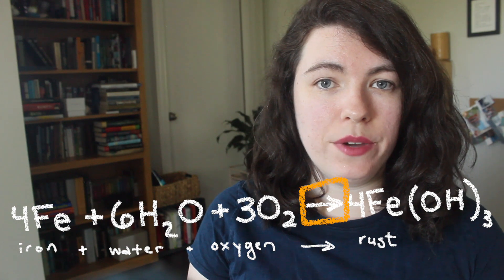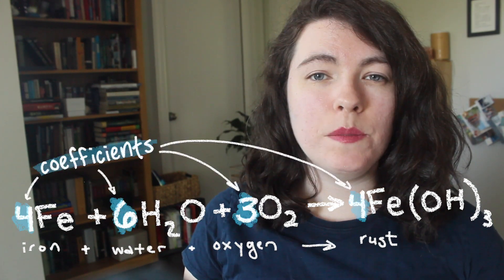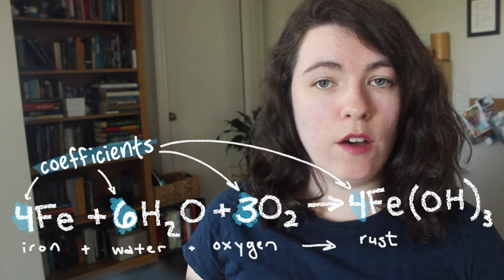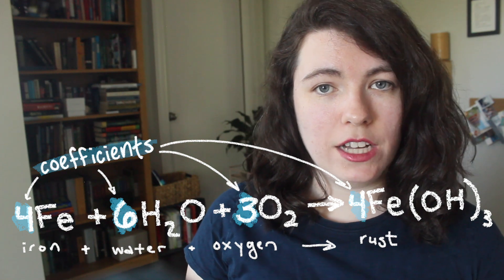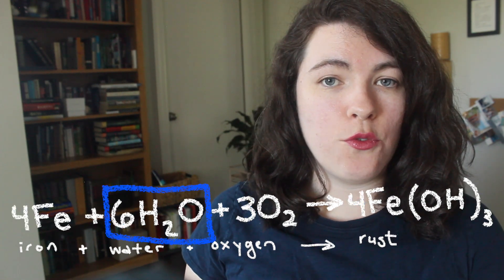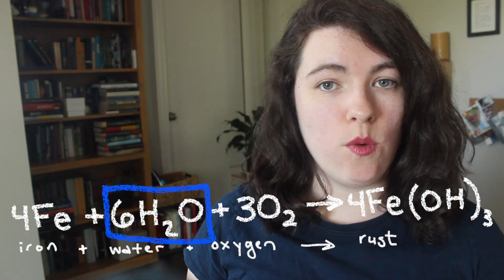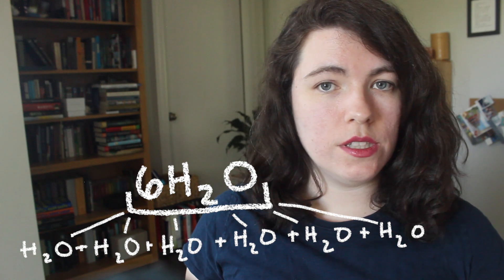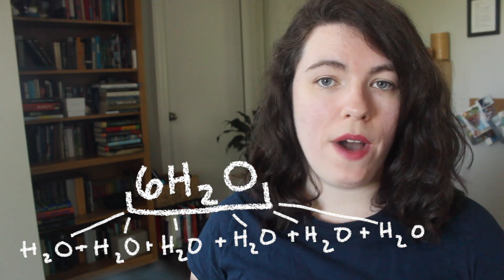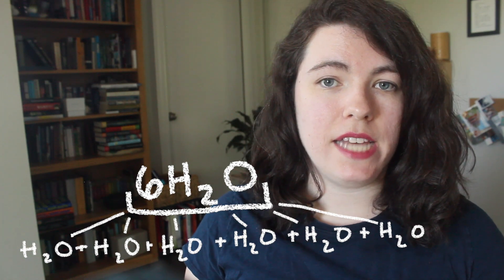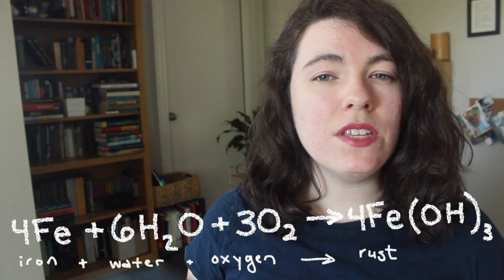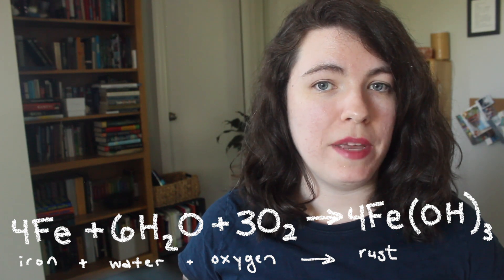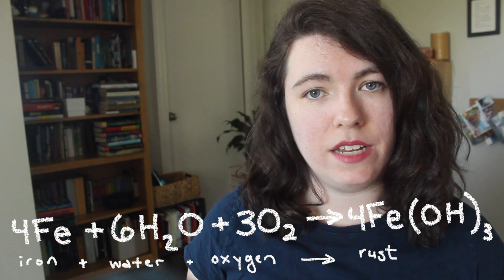The arrow in the middle of the equation indicates that the reaction has occurred. These bigger numbers in the equations are called coefficients, and they indicate how many of each molecule is present in the reaction. When the coefficient is before a molecule that's made up of multiple atoms, like water, the coefficient indicates that there are six whole water molecules — so six times two, or twelve, atoms of hydrogen and six atoms of oxygen. Because of the law of conservation of mass, there will be the same number of atoms of each element on the left side of the equation as on the right side.